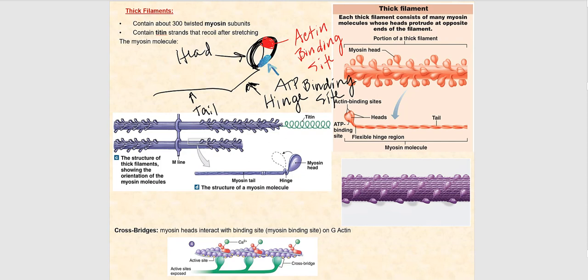Here is my M-line, and this is your thick myofilament with titin going through the core. Notice the heads of myosin — on one side of the M-line all the myosin heads are pointing in this direction, and on the other side of the M-line the myosin heads face the other way. This matters because it will look different when the muscle actually contracts. Right now they are all in a reclined position.